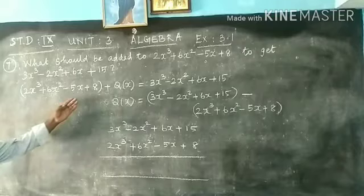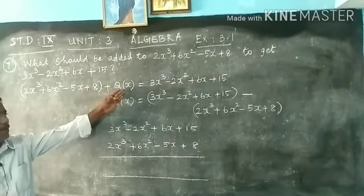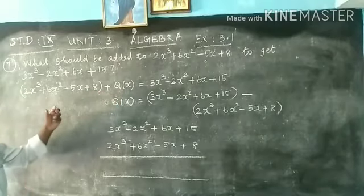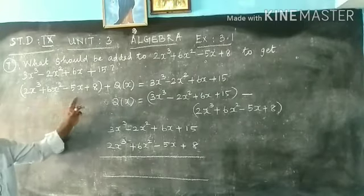Now, let Q(x) be the unknown polynomial. Then we will form one equation.